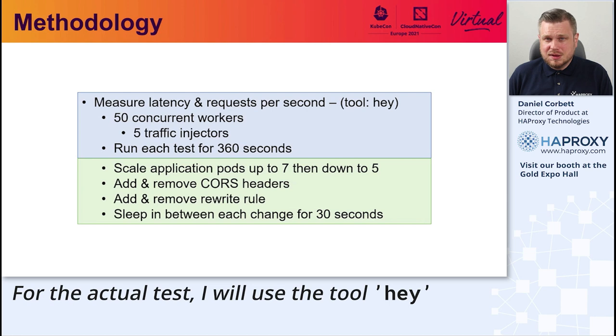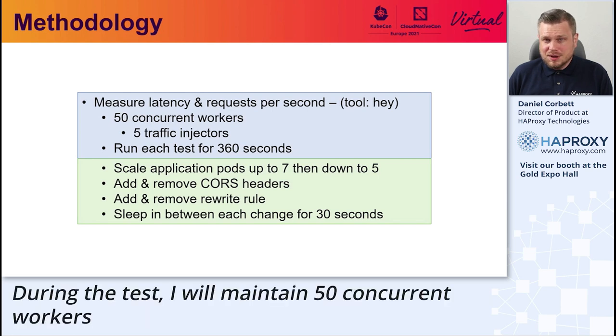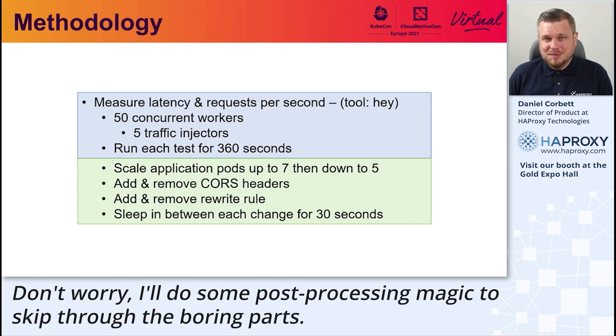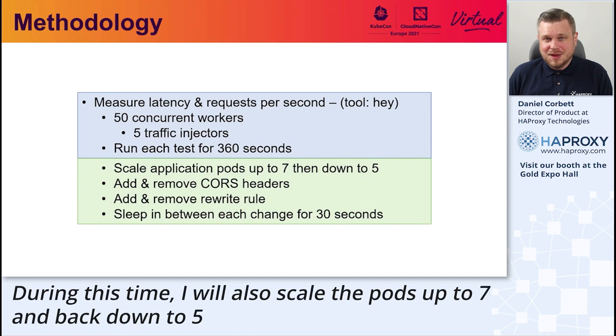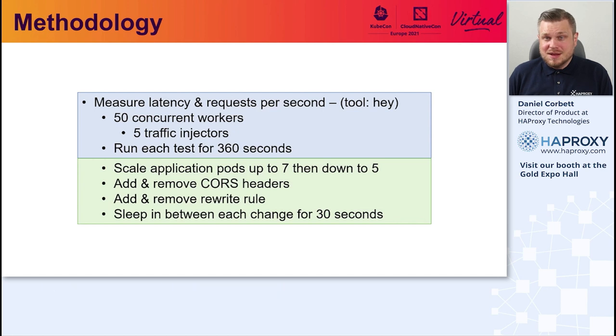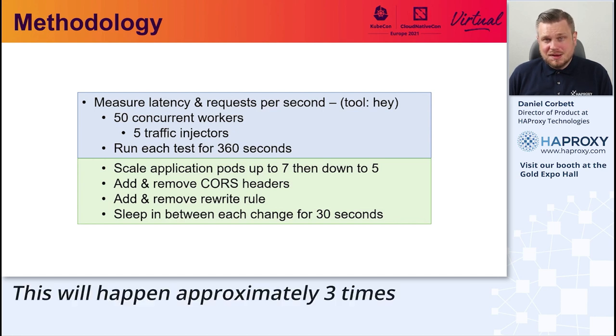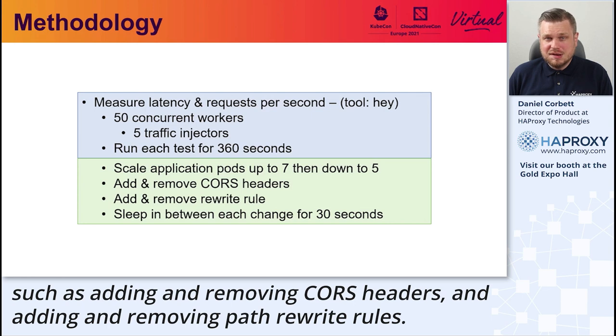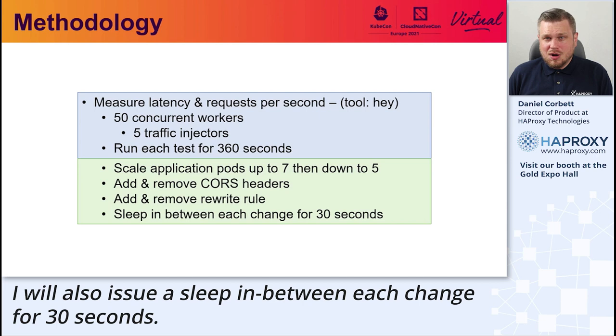For the actual test, I will use the tool Hey. During the test, I will maintain 50 concurrent workers from 5 traffic-injecting pods. Each Ingress controller will be benchmarked for a total of 6 minutes. Don't worry, I'll do some post-processing magic to skip through the boring parts. During this time, I will also scale the pods up to 7 and back down to 5 with 30-second intervals in between scale-outs. This will happen approximately three times, and then I will make several changes to the Ingress controllers themselves, such as adding and removing CORS headers and adding and removing path rewrite rules. I will also issue a sleep in between each change for 30 seconds.